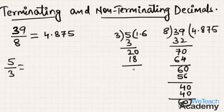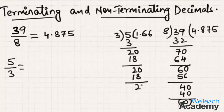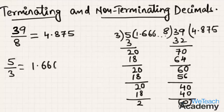Since 2 is not divisible by 3, we place one more 0 here. Again 3 times 6 is 18, and 20 minus 18 gives remainder 2 again. Writing 0 again, 3 times 6 is 18. If you observe, this division keeps repeating — the quotient is 1.666 which goes on repeating.